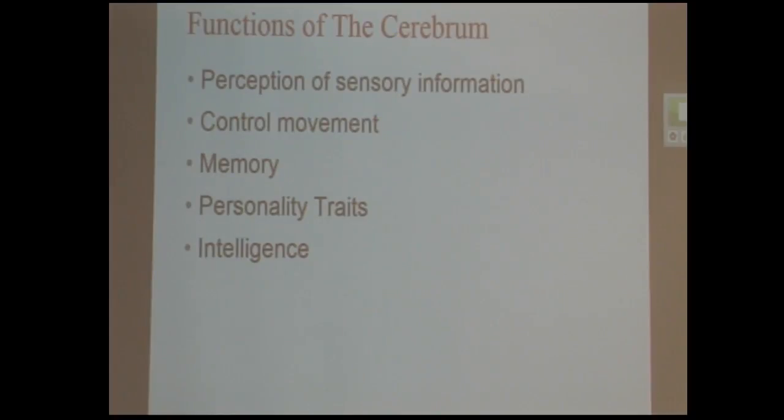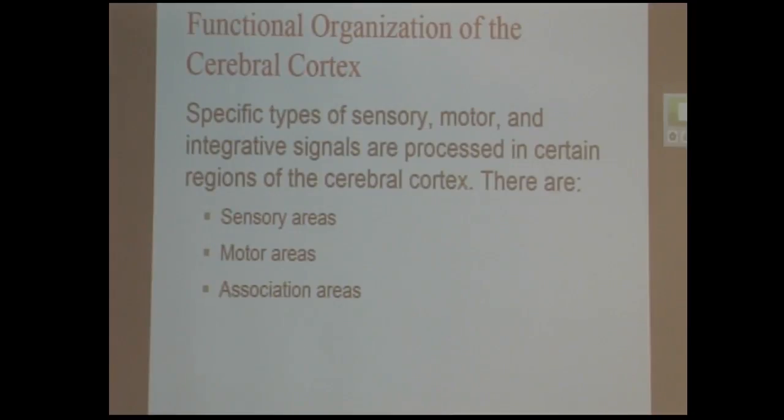What does the cerebrum do? Anything you consciously think about is the cerebrum. So all your perception of the world around you from all your senses. Any of your skeletal muscle voluntary movement, memory, personality, intelligence. Really anything you can imagine. And if you look at the imaging studies and the people with brain damage studies, there's all kinds of different locations where different things happen. We divide them into three categories: sensory areas, motor areas, and association areas.